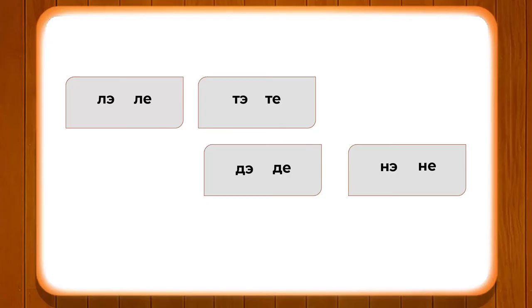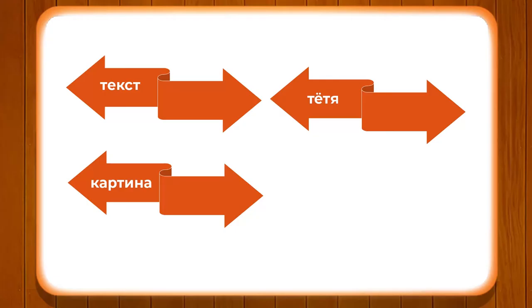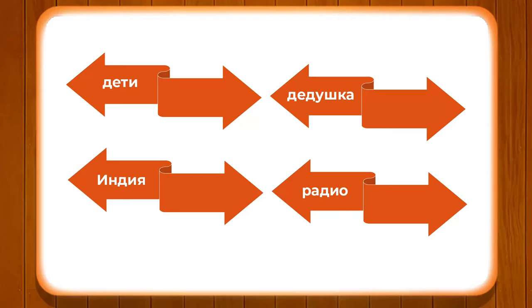Now we have certain words where these consonants are being used. Pay attention to the pronunciation to identify each letter individually. The first word is TEKST meaning text, then TYOTYA meaning aunt, KARTINA meaning picture, and DEVUSHKA meaning girl.